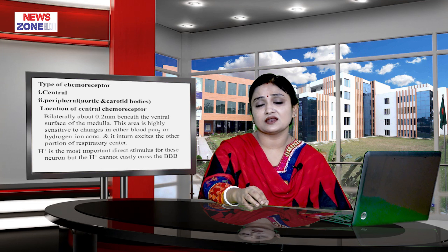The central chemoreceptors are located in the ventral portion of the medulla oblongata, 0.2 mm beneath the ventral surface. They are stimulated when there is an increase in partial pressure of carbon dioxide and hydrogen ion concentration, thereby stimulating the respiratory center. Hydrogen ion is the most important direct stimulant for the neurons, but hydrogen ions cannot easily cross the blood-brain barrier. Therefore, increasing hydrogen ion concentration in the blood has less effect. Rather, it is increasing partial pressure of carbon dioxide that has more effect, secondary to changes in hydrogen ion concentration, while carbon dioxide has a more potent indirect effect.